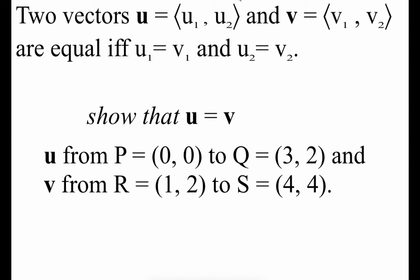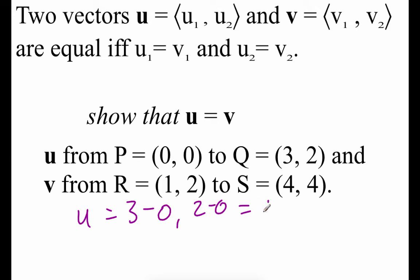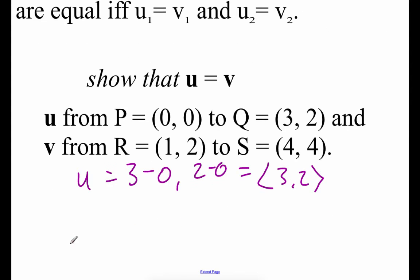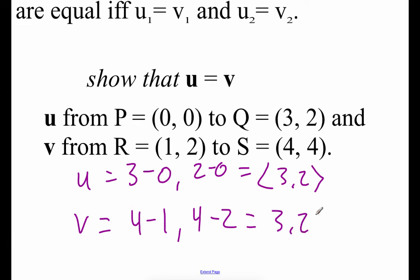Earlier we showed two vectors were equivalent using magnitude and slope. With vectors in component form, we just need to show they have the same x value and the same y value. Vector U from (0, 0) to (3, 2): terminal x minus initial x and terminal y minus initial y gives component form ⟨3, 2⟩. Vector V from (1, 2) to (4, 4): similarly gives ⟨3, 2⟩. Since they have the same x value and y value, we can say they are equal to each other.